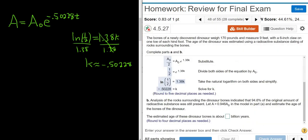Part B. All right, analysis of the rocks surrounding the dinosaur bones indicated that 94.6% of the original amount of the substance is still present. Okay. So let A be 94.6% of the original amount in the model to estimate the age of the bones. That's right. So let me explain this. So this formula tells us how much we have after T years.